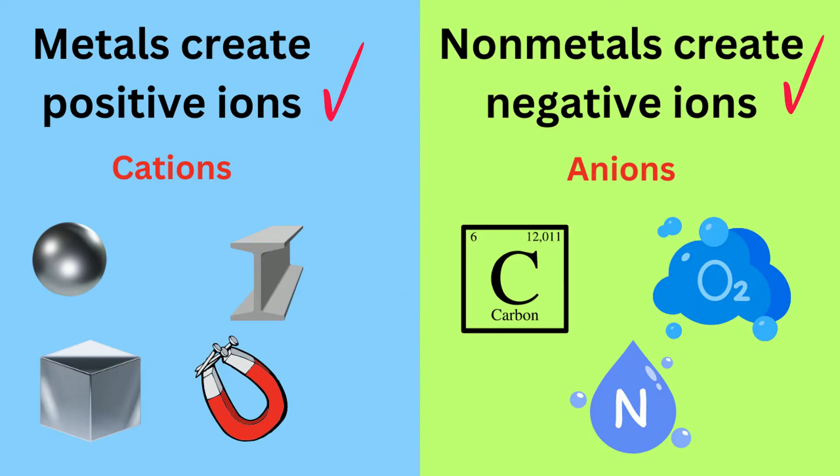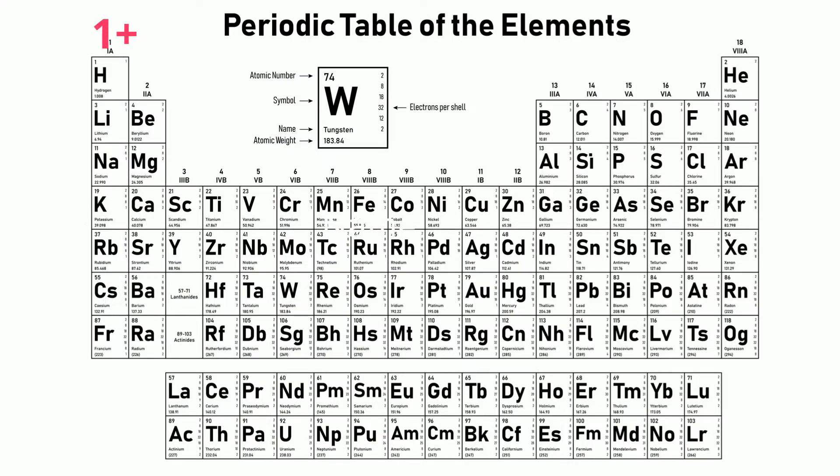The group 1A metals all form 1 plus ions. Group 2A metals all form 2 plus ions, and group 3A metals all form 3 plus ions. So for groups 1 through 3, the charges of the cations will be the same as the group number.